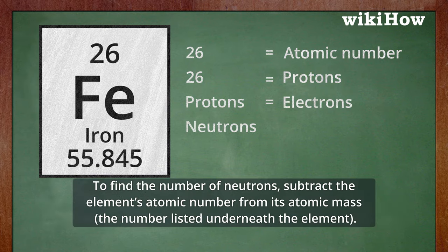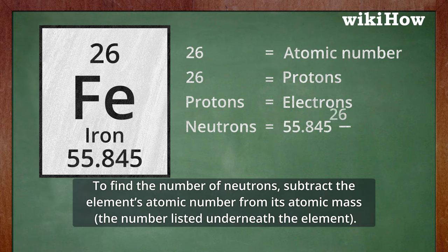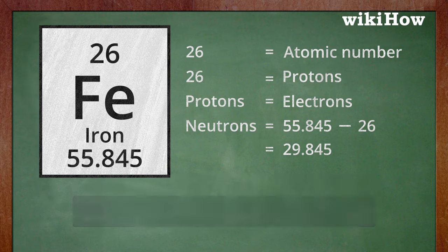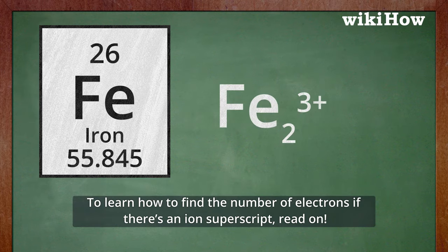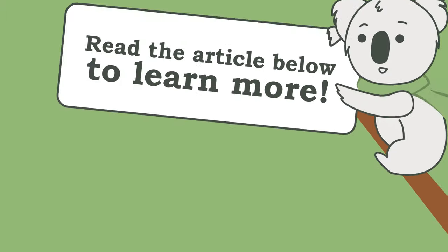To find the number of neutrons, subtract the element's atomic number from its atomic mass — the number listed underneath the element. To learn how to find the number of electrons if there's an ion superscript, read on.